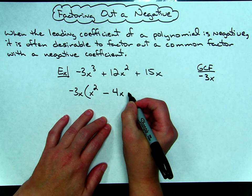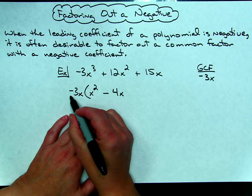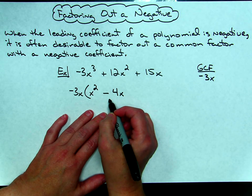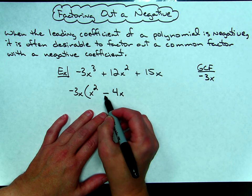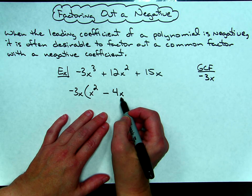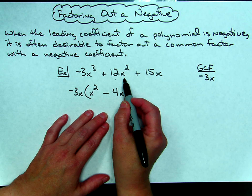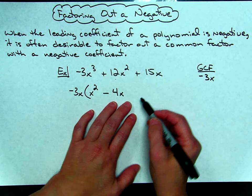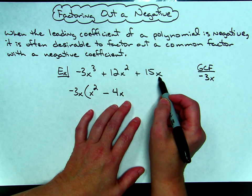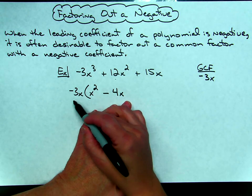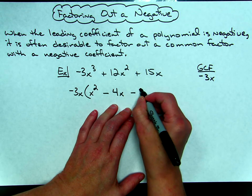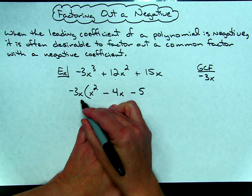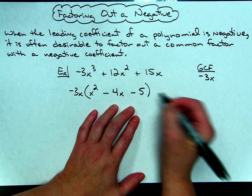You can always double check yourself. If I were to distribute this back out, I should be able to re-multiply this and get what I started with, so a negative 3x times a negative 4x is going to give me that positive 12x squared. Now in this last term I've got a 15x, I'm going to factor out the negative 3, that's going to leave me with a negative 5, and then x taking out the x, then I will not have any variables right there.